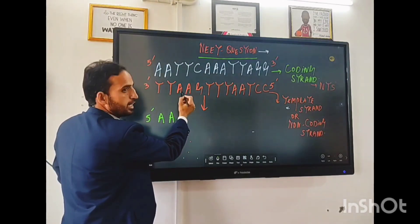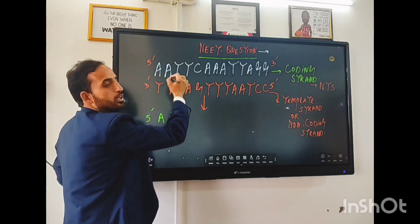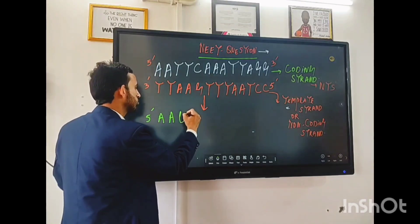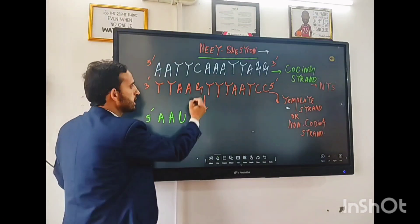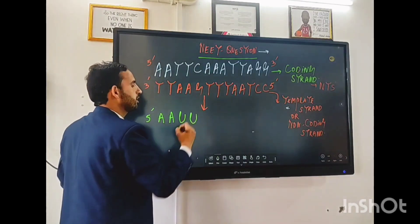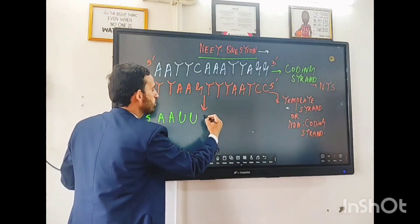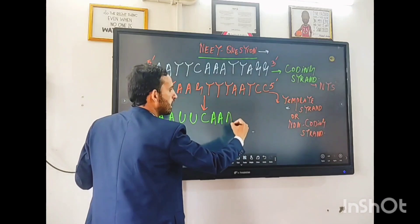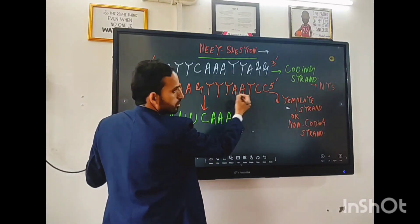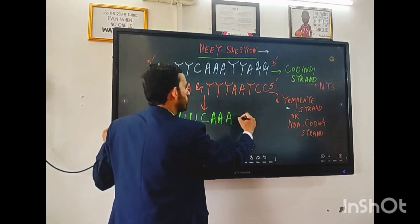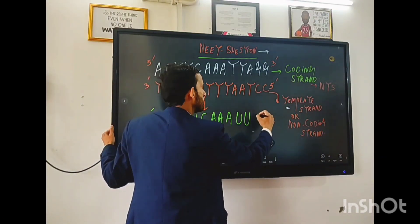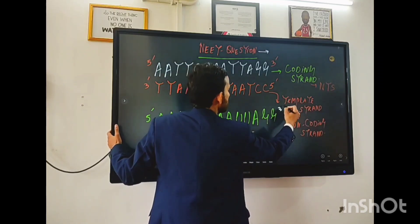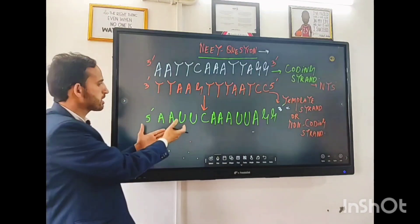Now adenine normally makes a bond with thymine. But in the case of RNA, there is no thymine — so instead it will be uracil. If there is guanine, it will pair with cytosine. If there is adenine, it will pair with uracil. This is the answer we have here — the mRNA sequence is derived from the template strand using complementary base pairing, with uracil replacing thymine.